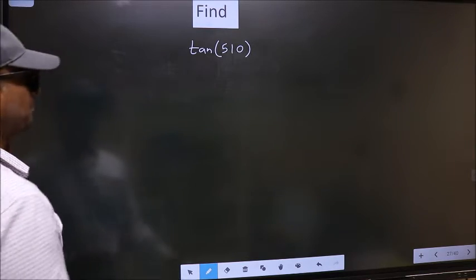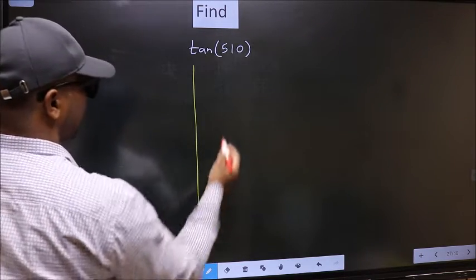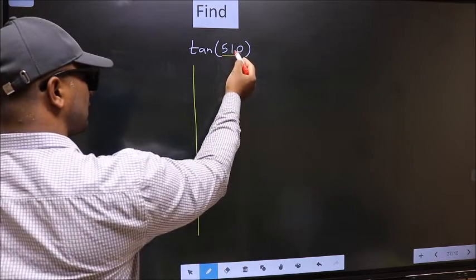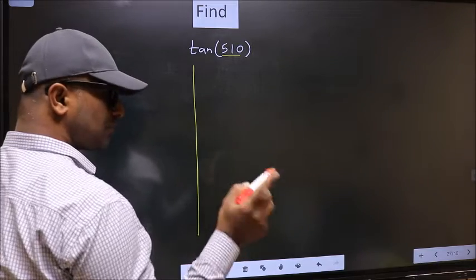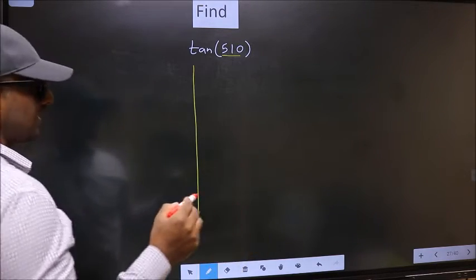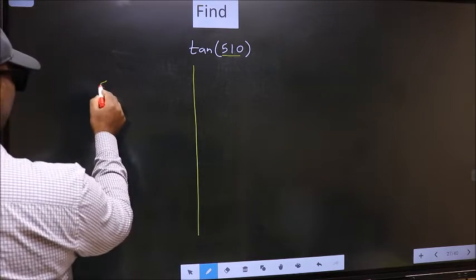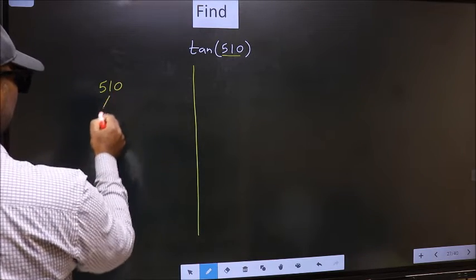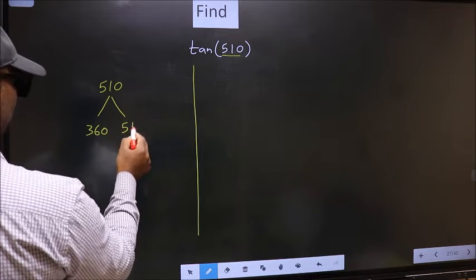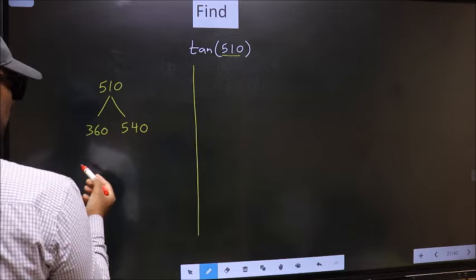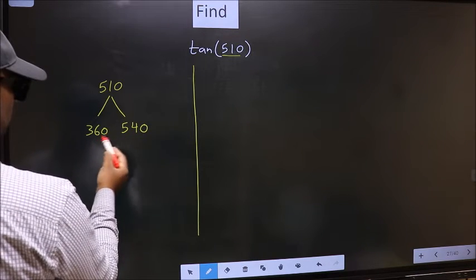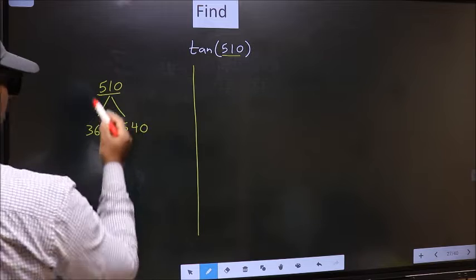See, here we have 510. Now you should check 510 lies between which two multiples of 180. What I mean is 510 lies between 360 and 540. This is 180 × 2 and this is 180 × 3. Between these two numbers, 510 lies.